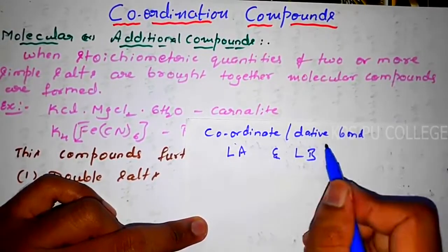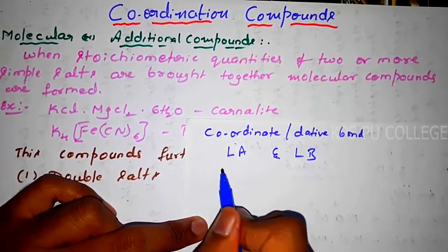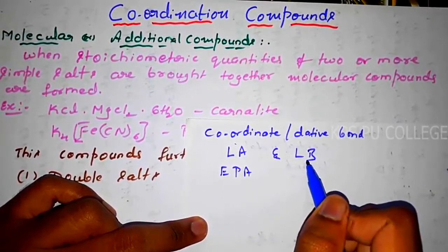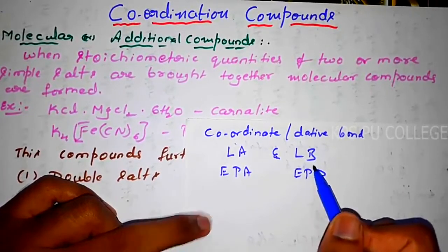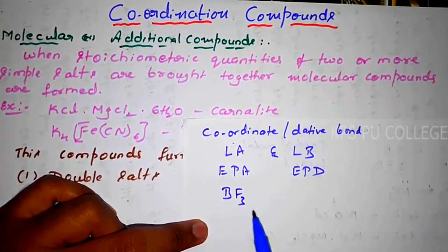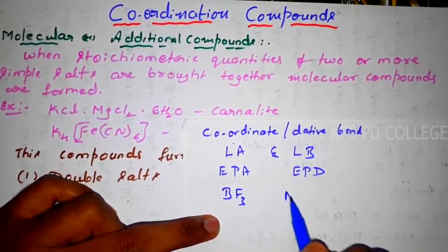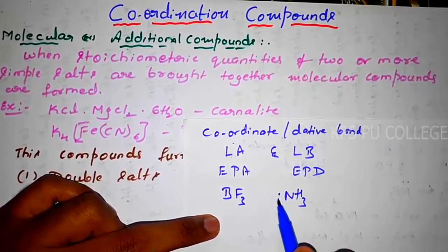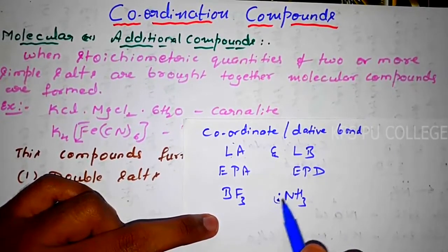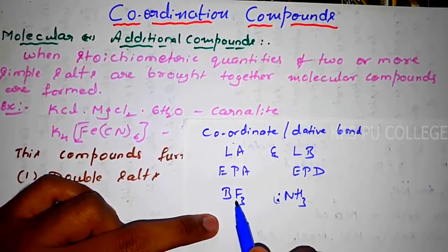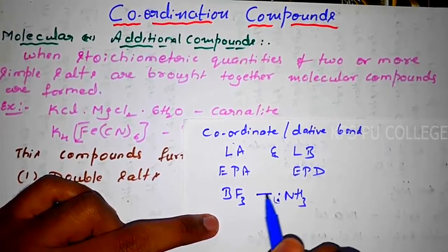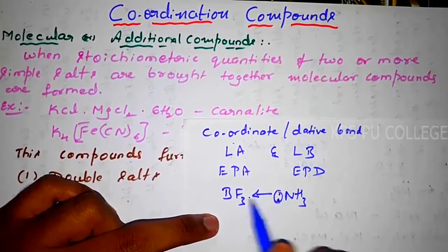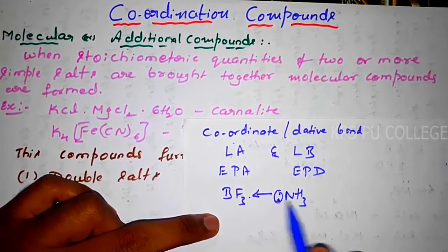This coordinate or dative bond exists between a Lewis acid and a Lewis base. Lewis acid is an electron pair acceptor and Lewis base is an electron pair donor. For example, BF3 (boron trifluoride) is an electron pair acceptor — it is a Lewis acid. And NH3 (ammonia) is a Lewis base because it has a lone pair of electrons it can donate.